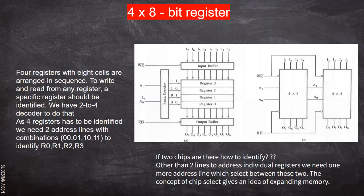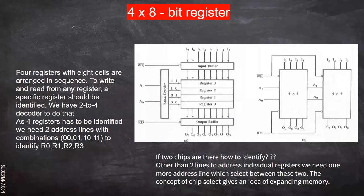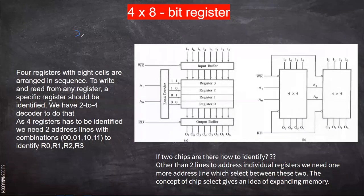So now we have zero and one as two inputs. With two inputs, you can say two to the power two, which equals four. Four combinations are possible.